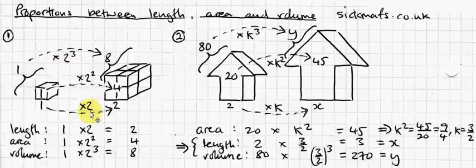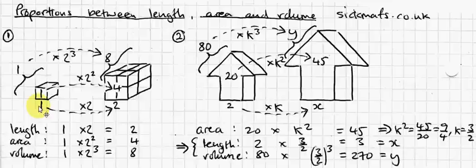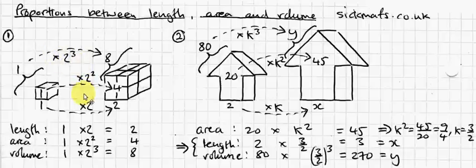So, that basically completes this idea that the scale factor between the lengths was two, the areas was two squared, and the scale factor between the volumes was two cubed. And it's a very simple relationship, isn't it? So, once you know this linear scale factor, or the length scale factor, you can work out the other scale factors.